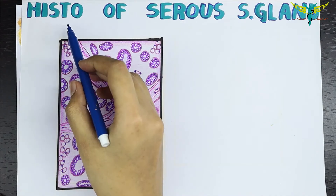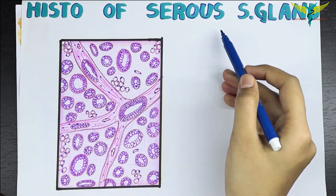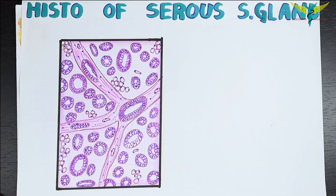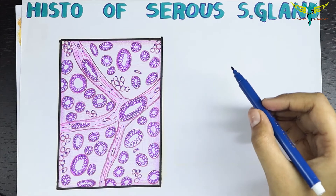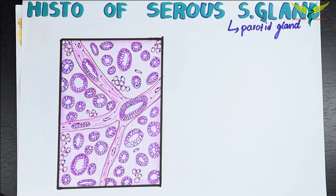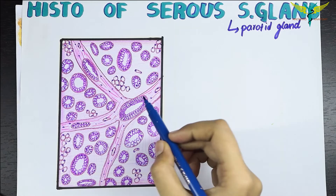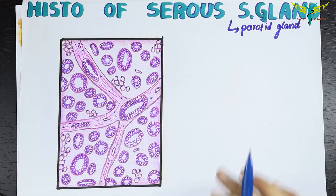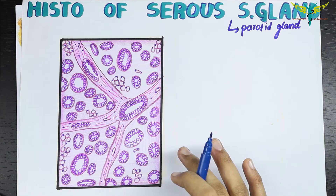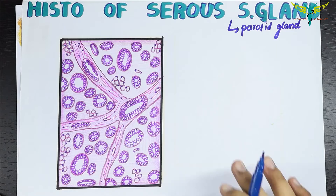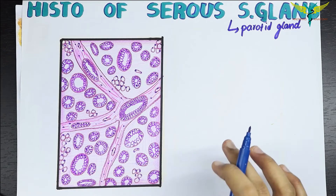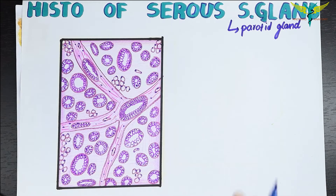In this video, let's learn about the histology of the serous type of salivary gland. The parotid gland is a serous type of salivary gland. Glands are classified as serous, mucous, or mixed type based on the presence of acini which are serous or mucous in type.